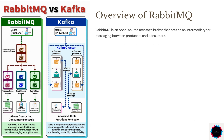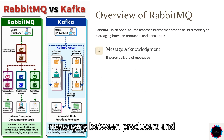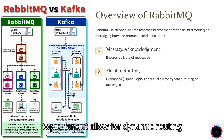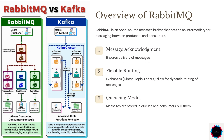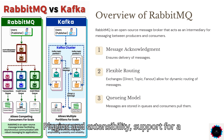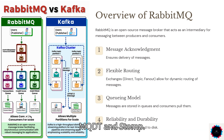Overview of RabbitMQ. RabbitMQ is an open-source message broker that acts as an intermediary for messaging between producers and consumers. Key features include: Message Acknowledgement – ensures delivery of messages; Flexible Routing – exchanges (direct, topic, fanout) allow for dynamic routing; Queuing Model – messages are stored in queues and consumers pull them; Reliability and Durability – messages can be persisted to disk; and Plugins and Extensibility – support for a wide range of plugins, e.g., for monitoring or additional protocols like MQTT and STOMP.